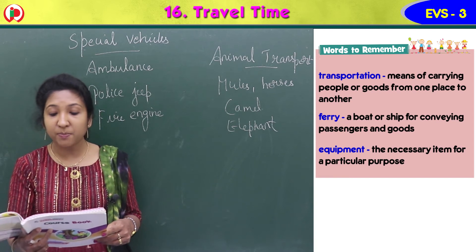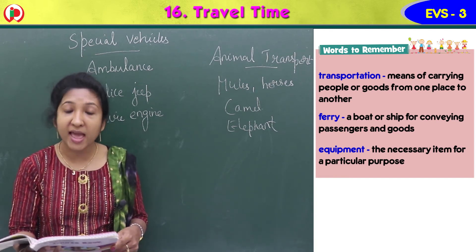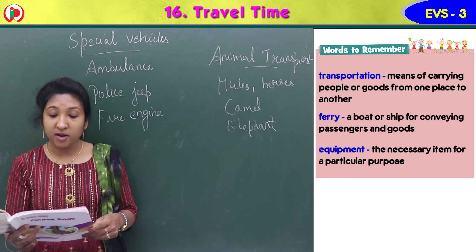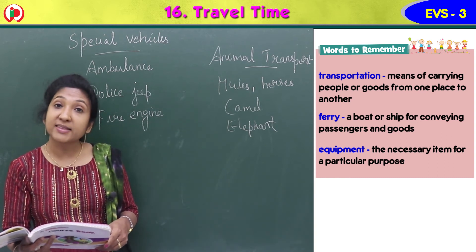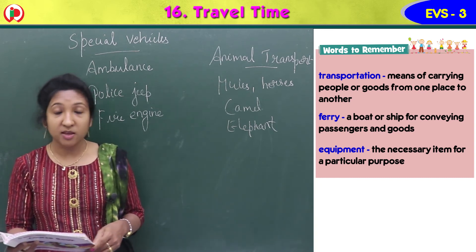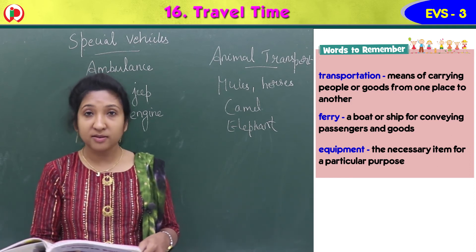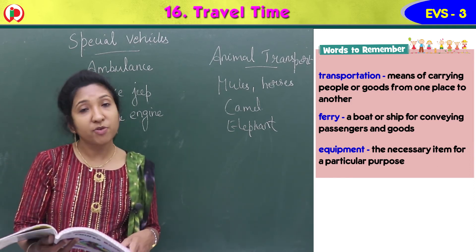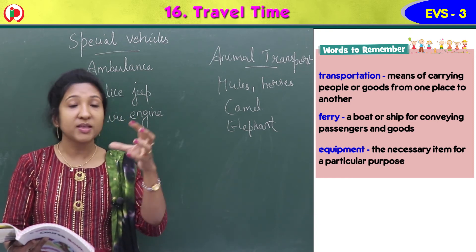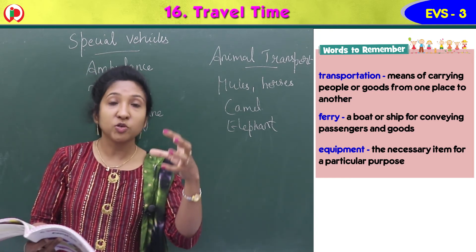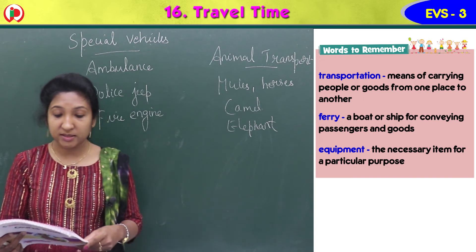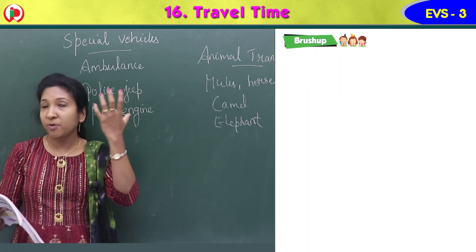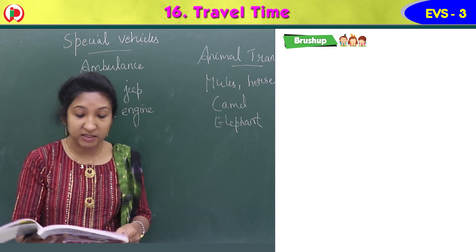Words to remember: Transportation means the means of carrying people or goods from one place to another. Ferry means a boat or ship for conveying passengers and goods. Equipment means the necessary items for a particular purpose. Let's brush up and recall what we learned.